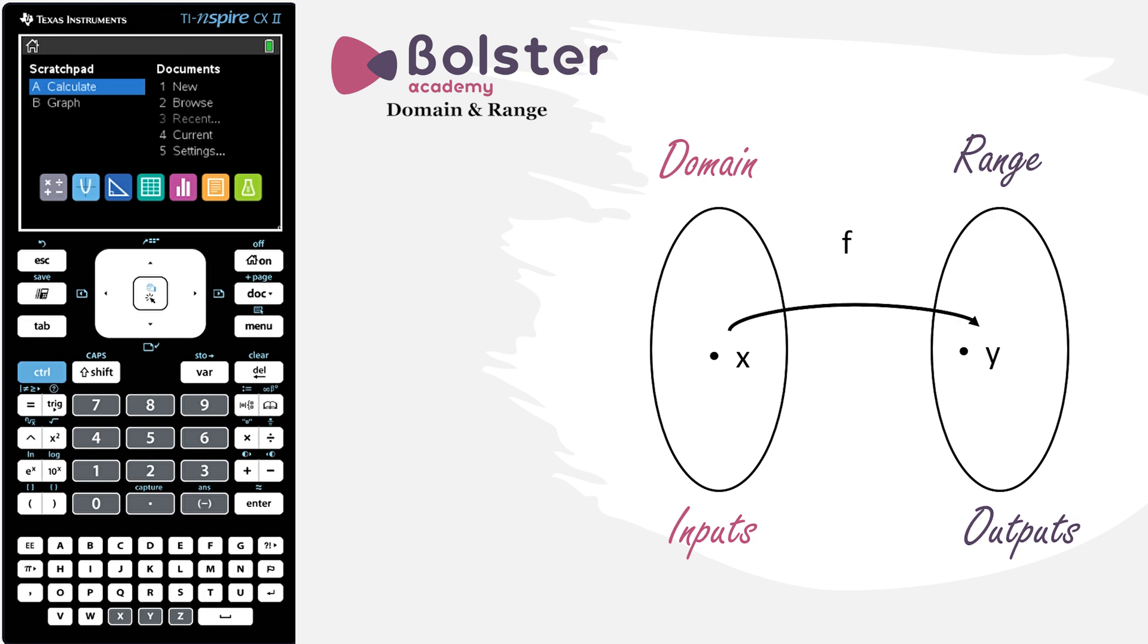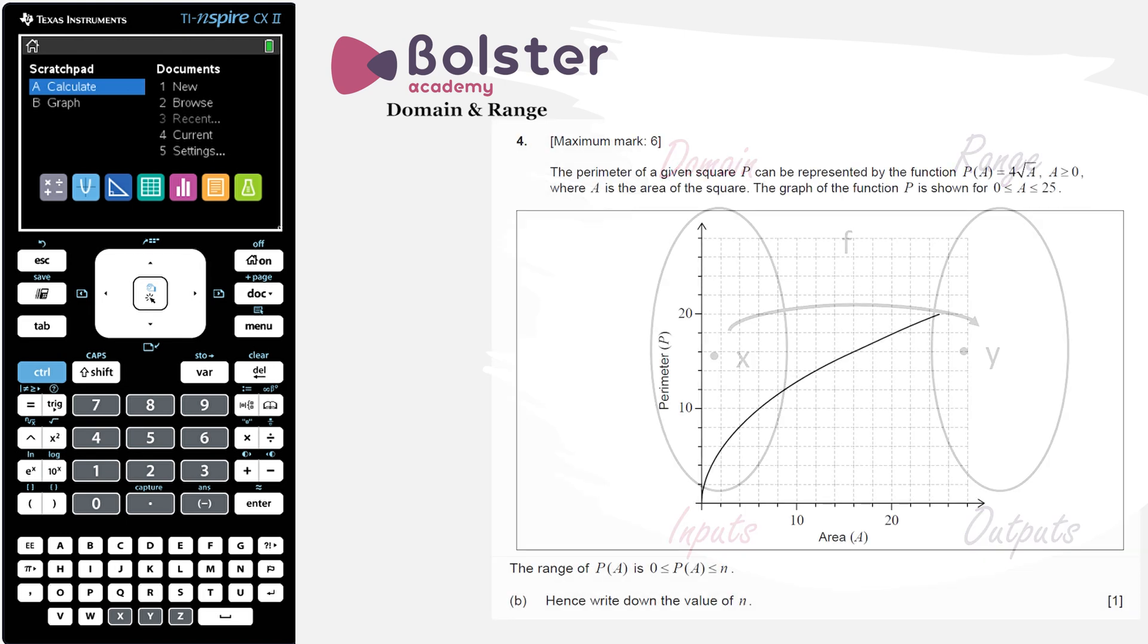Let's look at a question from the specimen papers the IB have given out. The perimeter of a given square P can be represented by the function P of A, where P of A equals 4 times the square root of A, where A is greater than or equal to 0, and A is the area of the square. The graph of the function P is shown for A between 0 and 25. The range of P of A is between 0 and n. Hence write down the value of n.